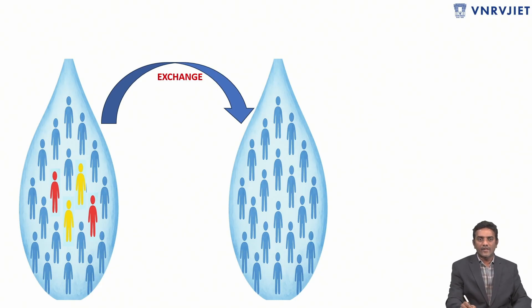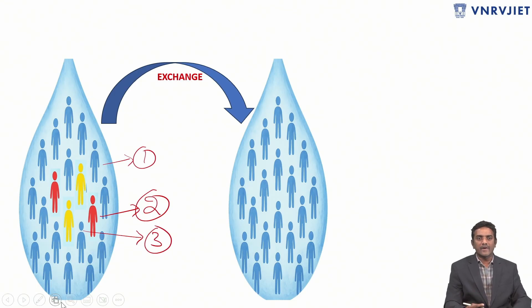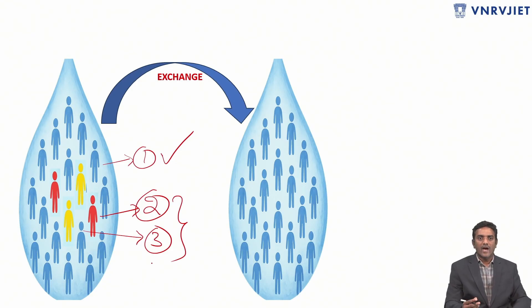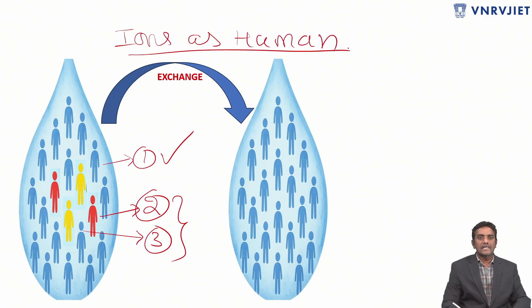If we remove unwanted ions like calcium and sulfate with H⁺ and OH⁻ ions, we can call it the ion exchange method. To understand this, let us assume a water droplet. I am going to consider ions as humans: blue-colored humans are good for water, while red-colored and yellow-colored humans represent two different types of unwanted ions that are not good for water.